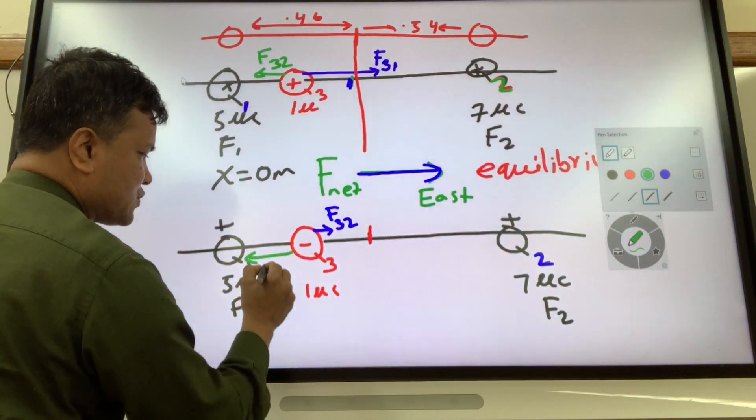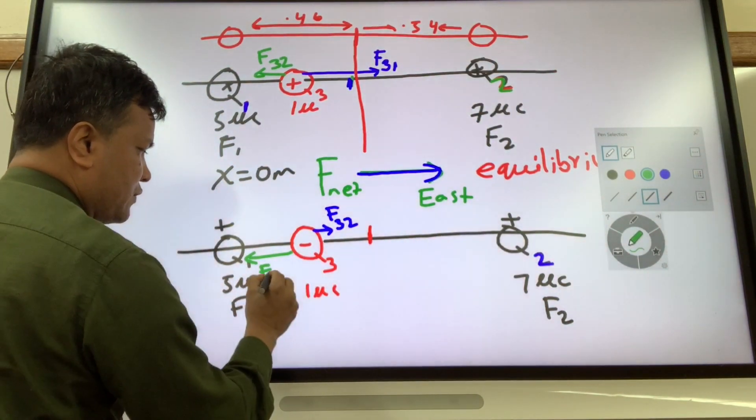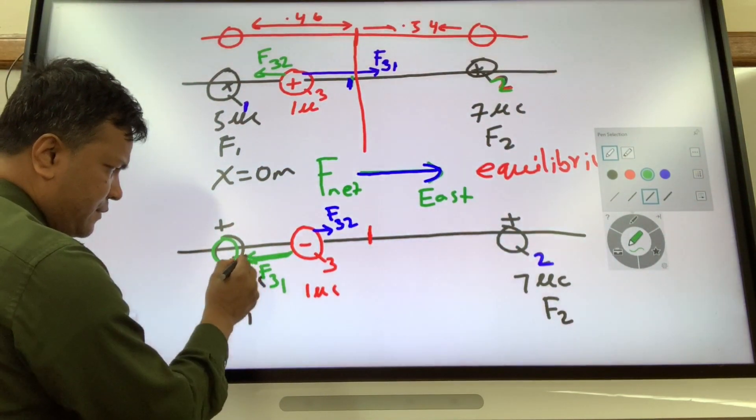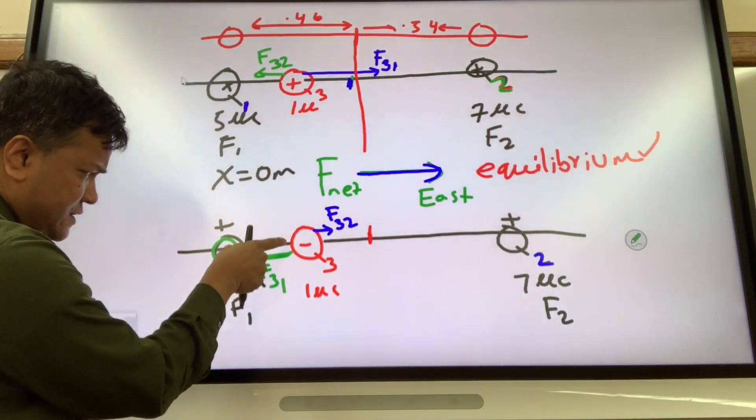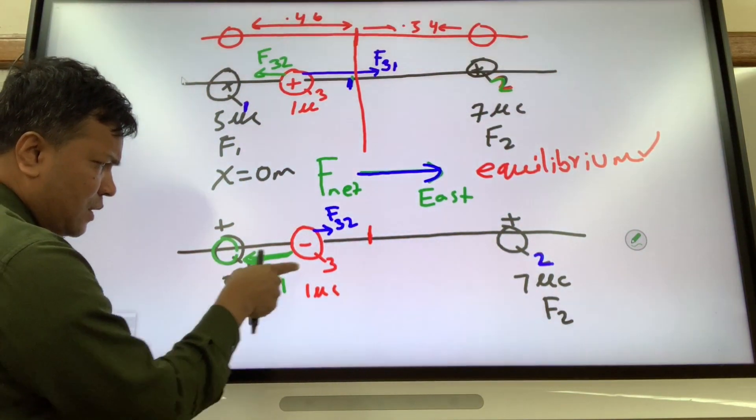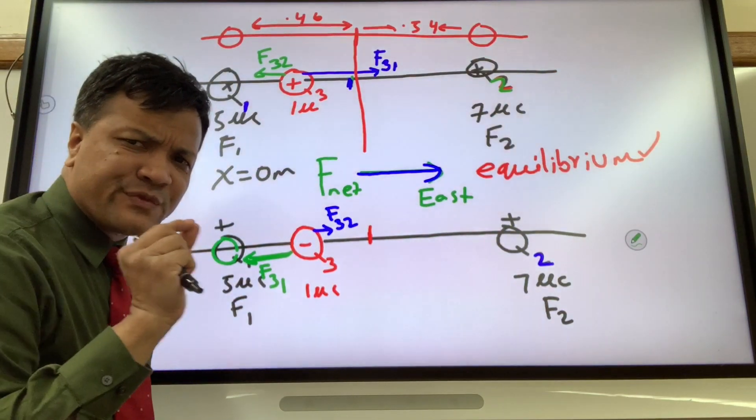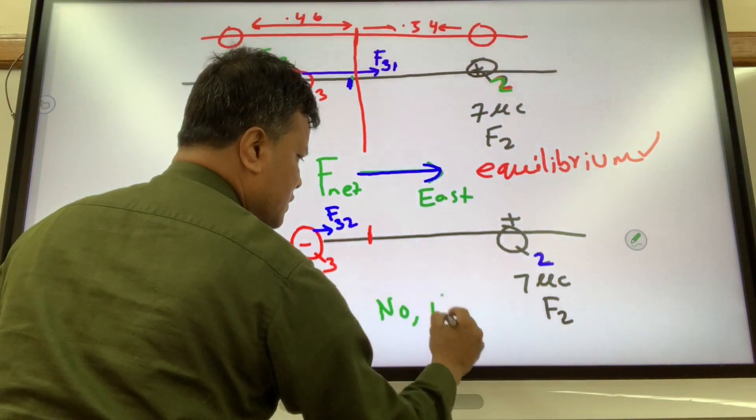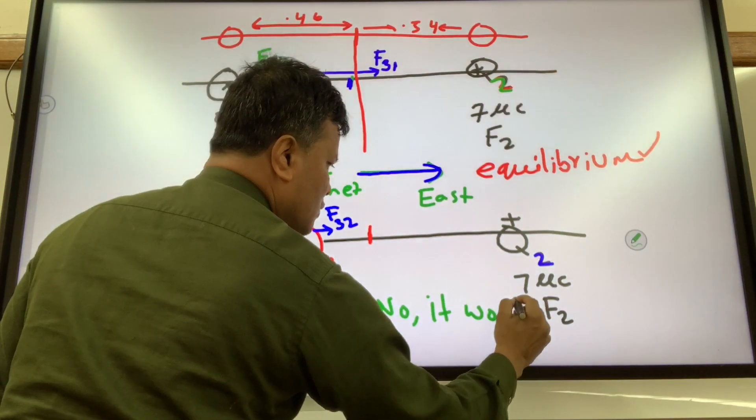This is the force on 3 due to 1. This one is bigger because the distance between 5 microcoulombs and 1 microcoulomb is very small.